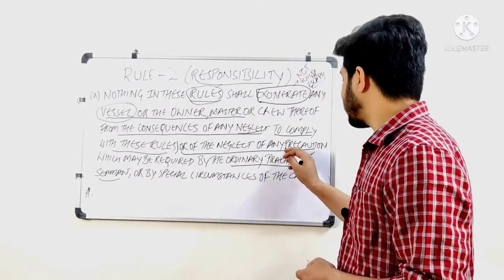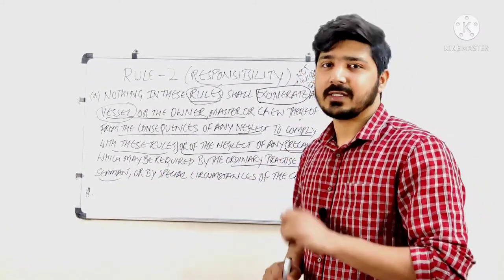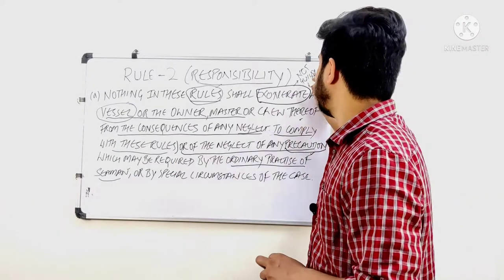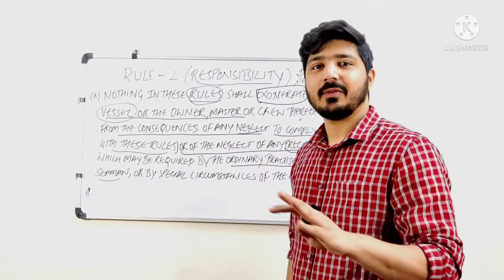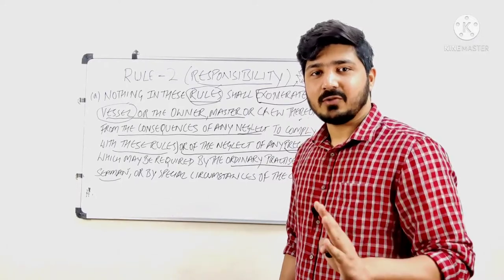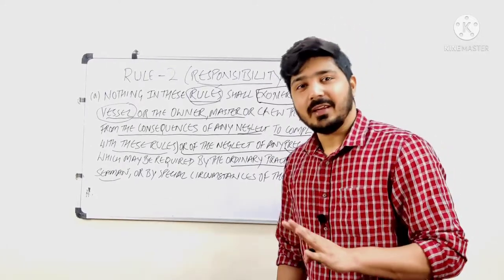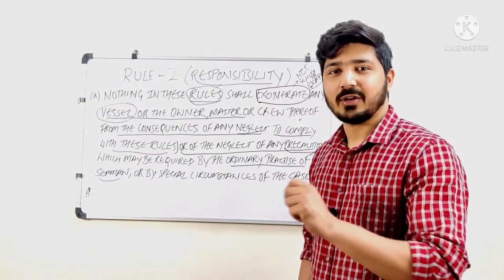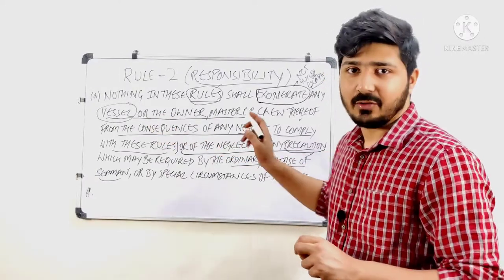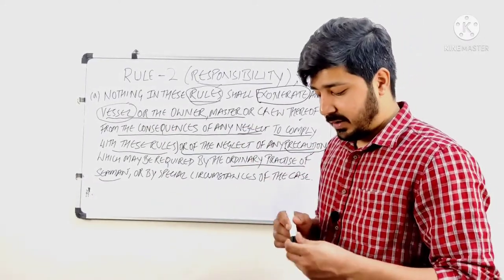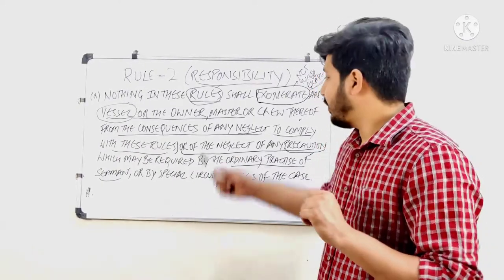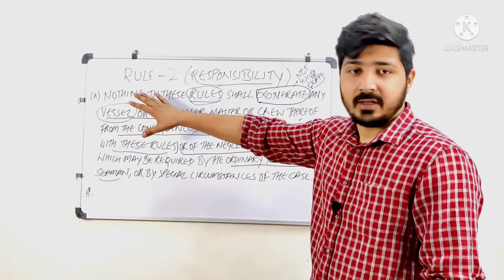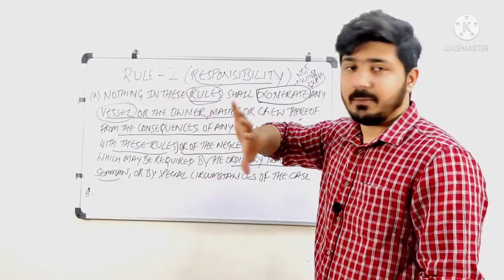If you do not follow common sense and have not taken precautions accordingly, you will be found guilty. You will not be able to escape. Basically, no matter what happens, if something goes wrong, everything is on your head. You cannot use rules or loopholes to get out of the situation. That is what Part A covers.